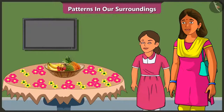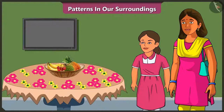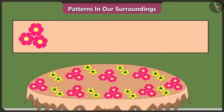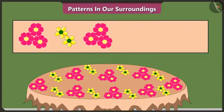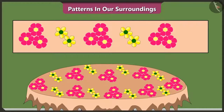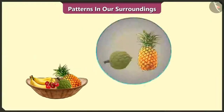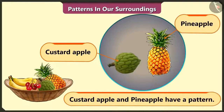Mommy, our table cloth also has a pattern. Did you notice? Vinny, what is the pattern of this cloth? It has three flowers, then two flowers, then again three flowers, two flowers, three flowers, two flowers — it gets repeated and that's how this pattern is created. Well done, Vinny. Very good. Now, can you tell which of the fruits on the table have a pattern? There is a pattern in custard apple and pineapple.